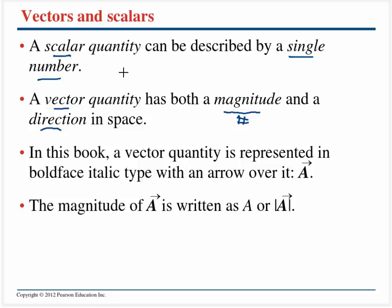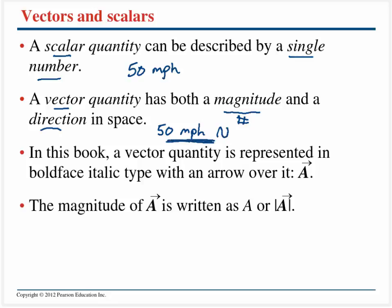For example, my speed — a scalar quantity — might be 50 miles per hour. A vector quantity has more information associated with it. It has a number, maybe 50 miles per hour, and it has the direction. So 50 miles per hour north contains a lot more information than the scalar quantity.